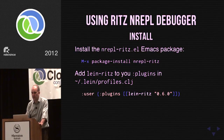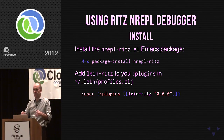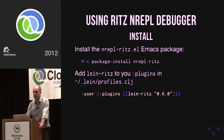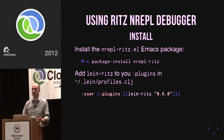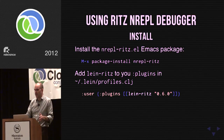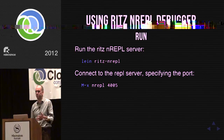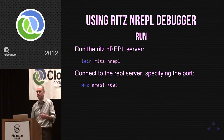To use the debugger, do 'package-install nrepl-ritz' from now on I'm talking about nrepl.el and how to use Ritz within it. You need to install the nrepl-ritz package, which provides extensions to nrepl.el, and add lein-ritz to your plugins. In Leiningen 2, plugins are handled through the profile system — a major improvement. The easiest way to make it available to all your projects is to add it to your user profile. Then you can start a REPL server with 'lein ritz-nrepl', which spits out a port number you can connect to using a standard nREPL connection.